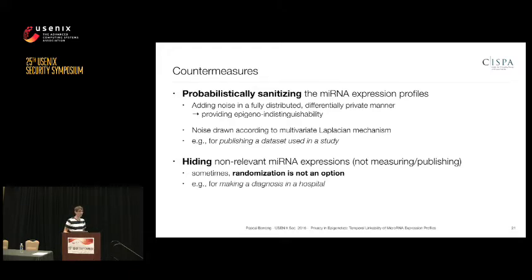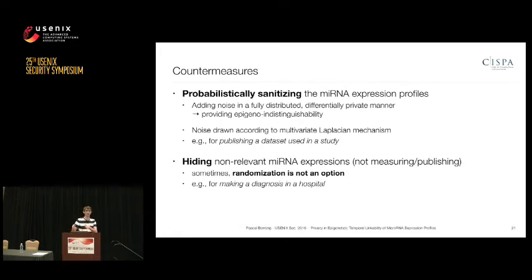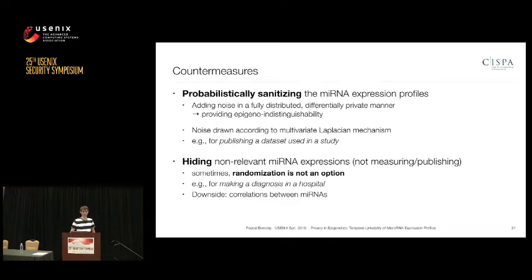Sometimes randomization or perturbing the data is simply not an option. For example, if you want a diagnosis in the hospital, doctors will simply refuse to add noise to the data because that could influence the diagnosis. Therefore, we also investigated a second countermeasure: hiding non-relevant microRNA expressions, where non-relevant means not associated with the disease being diagnosed. However, there are correlations between microRNAs, meaning even if you publish only a subset, you could use those correlations to infer information about the hidden ones.